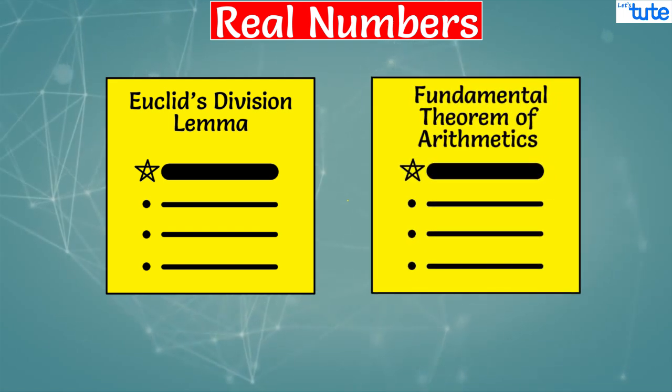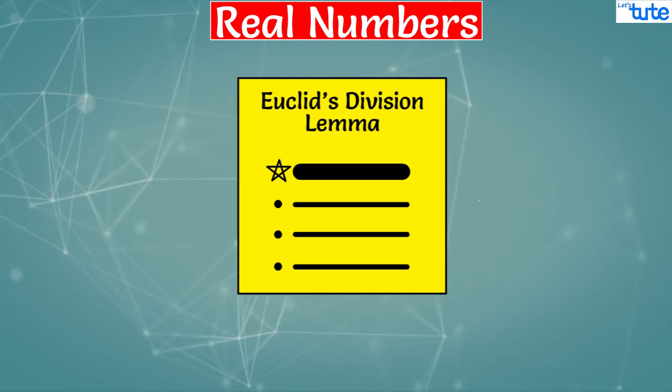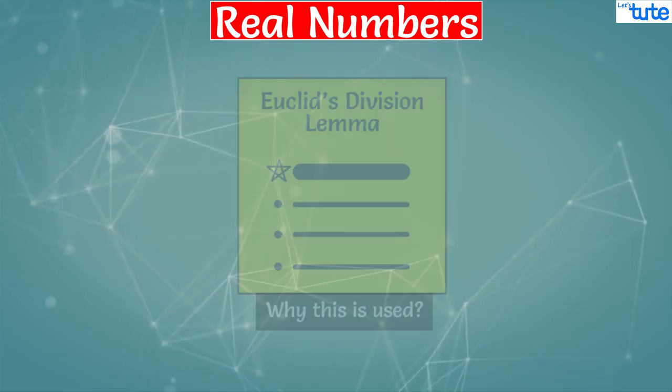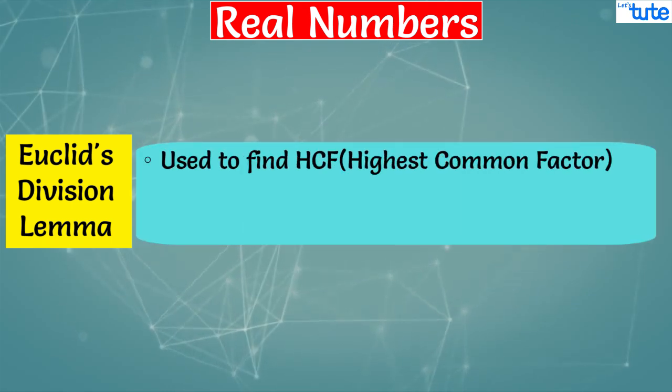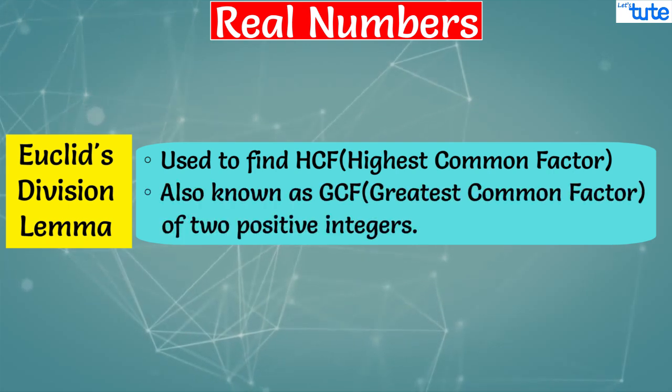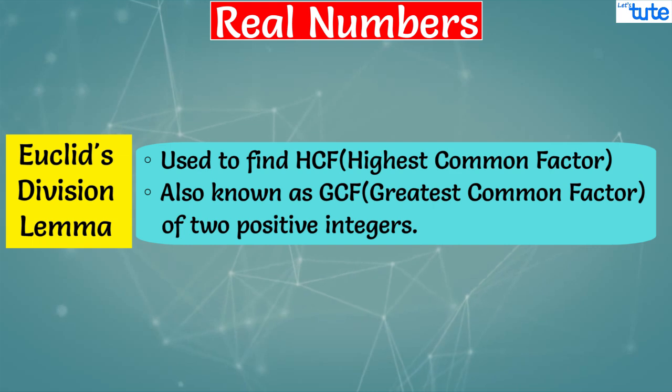Before understanding what is Euclid's division lemma, let's understand why this is used. Euclid's division lemma is used to find HCF, that is highest common factor, which is also known as GCF, greatest common factor of two positive integers.